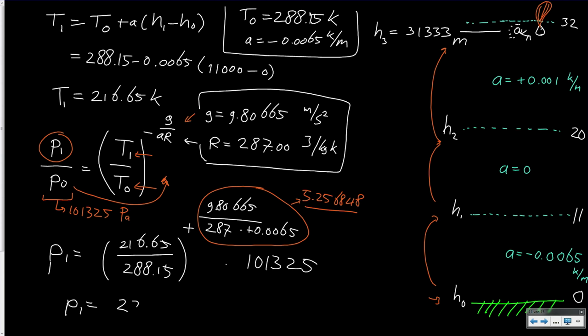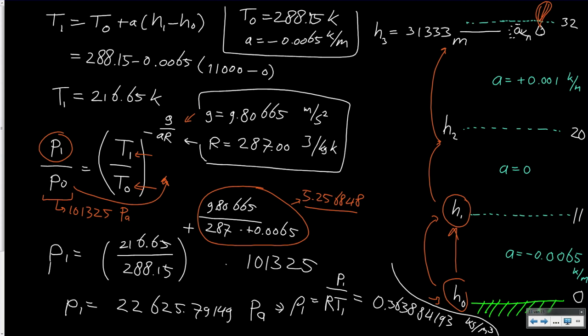If we calculate everything with the values, we will get our first pressure P1 = 22625.79149 Pascal, many digits just to be safe. Now simply using rho equals P divided by RT gives us our density, so we don't even have to use the other equation. This will be 0.363884193 kilogram per meter cubed. So now we have stepped to 11 kilometers and found these values.